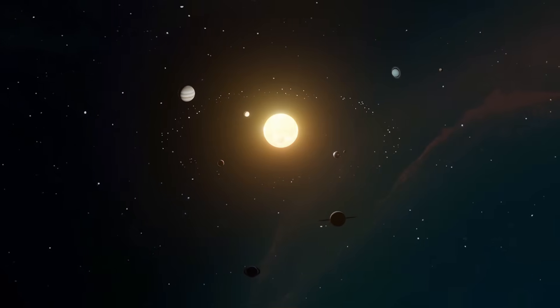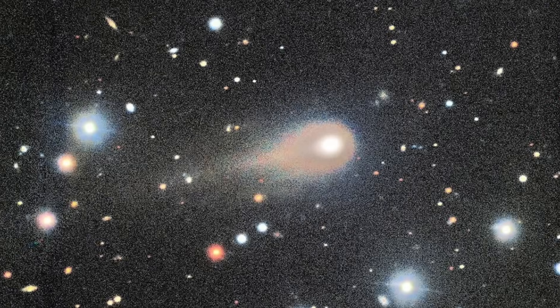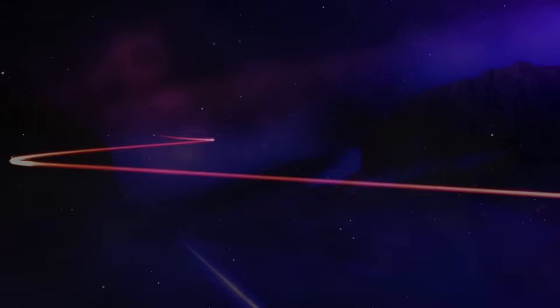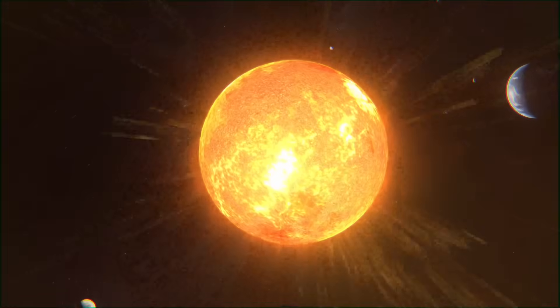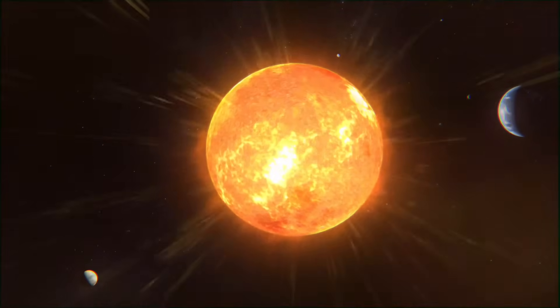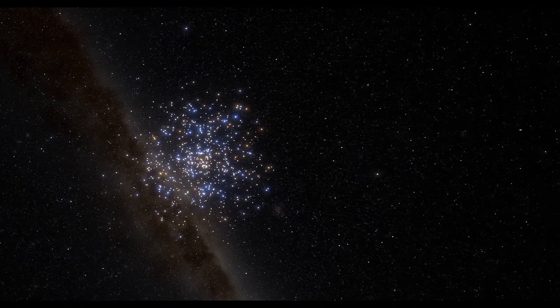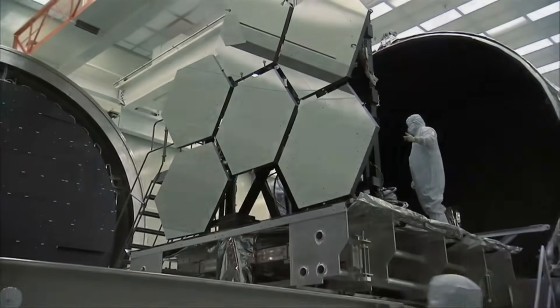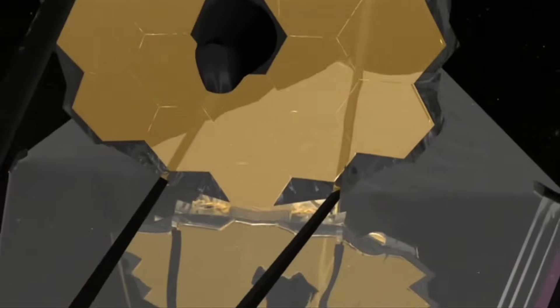Let's start with what makes this moment extraordinary. When 3i Atlas was discovered on July 1st, 2025 by a telescope in Chile, its speed immediately told astronomers something remarkable. This visitor isn't gravitationally bound to our Sun. It's just passing through, a traveler from another star system, on a journey that likely began billions of years ago. Since then, humanity's most powerful instruments have been watching its every move.